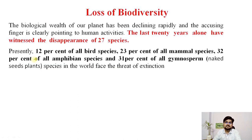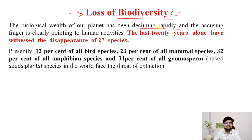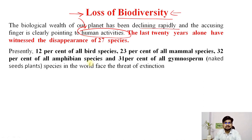In environmental geography we are concerned about biodiversity because there is a huge burden of our practices on these biodiversity features. There is a loss of biodiversity and degradation happening, and endangered species are increasing day by day. We are running into the sixth mass extinction. The biological wealth of our planet is declining rapidly, and the accusing finger is clearly pointed at human activities.